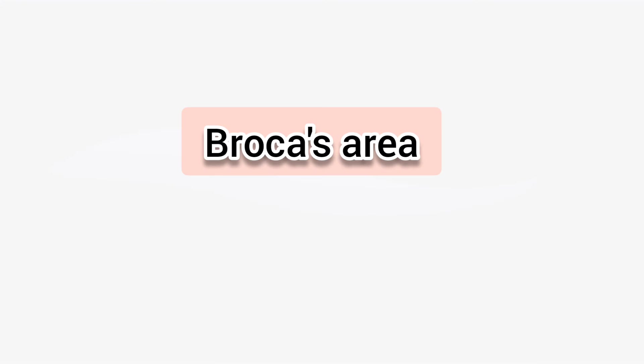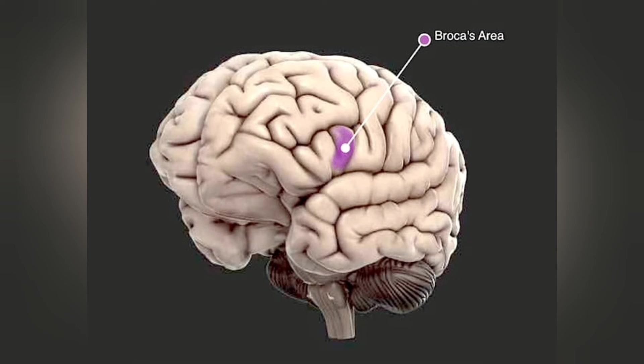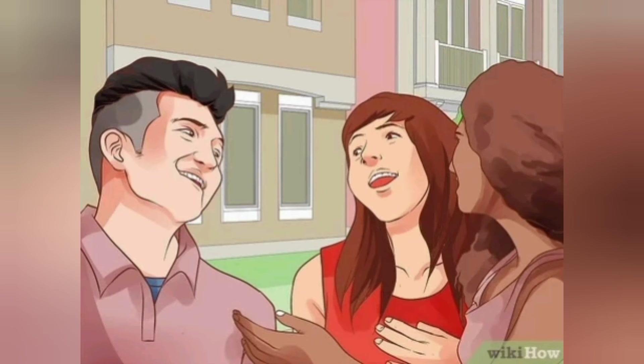The third part is the Broca's area. This part of the brain is vital in generating speech. This is one of the most important areas in our brain, because if you want to talk to someone, this area should function properly — then only you can speak.